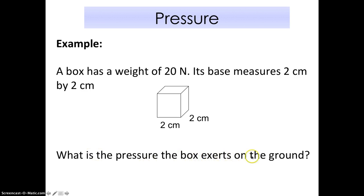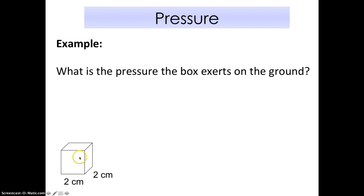First I need to find out the area that is facing the ground. This is my box. The area of the box touching the ground is 2 cm by 2 cm, but remember the SI unit is not cm, it's meter. So 2 cm I need to convert to meter is 0.02. 2 cm converted again is 0.02. 0.02 times 0.02, I get 0.0004 meter square or square meter.